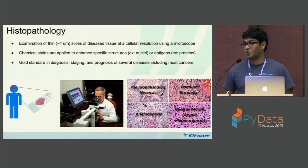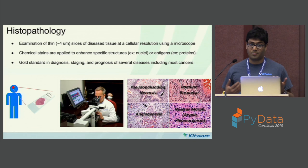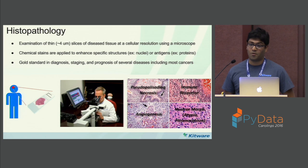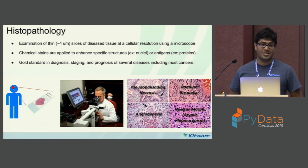Histopathologists typically look at the tissue architecture — each disease has a particular manifestation on the tissue architecture. They look at the morphology of cells, nuclei, and extracellular structures, which gives them information about what's going on with the disease. Histopathology is pretty much the gold standard in the diagnosis, staging, and prognosis of several diseases, including most types of cancers.